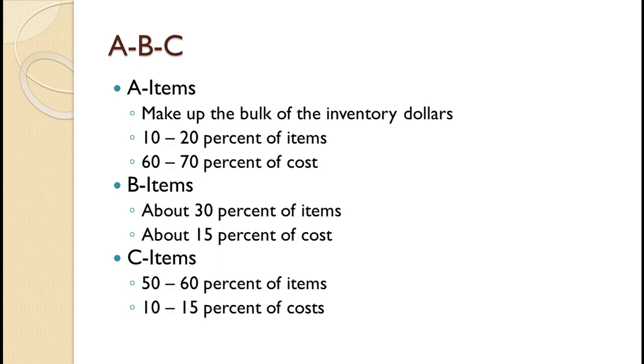C inventory items are low dollar items that need little management. Typically they make up about 10-15% of the cost and 50-60% of the count.